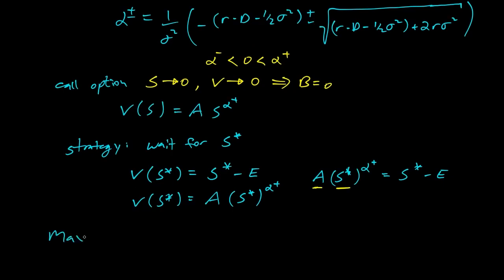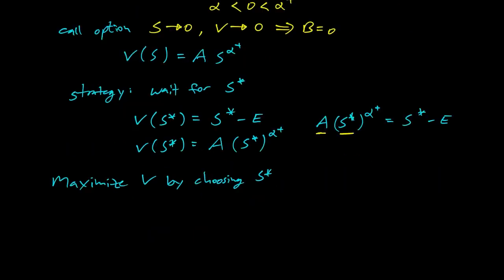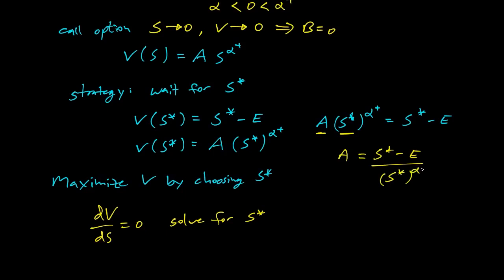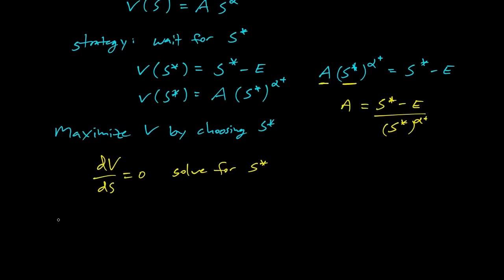We have one equation and two unknowns — A and S-star. To get another equation, we maximize V by choosing S-star optimally. We want to choose S-star to maximize our value when we exercise. Setting dV/dS equal to zero and solving for S-star, we can write A in terms of S-star as A equals (S-star minus E) divided by S-star to the alpha-plus, then solve the single-variable optimization.